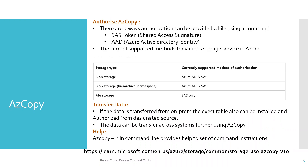Once everything is ready, you need to authorize AzCopy. There are two ways authorization can be provided: using a SAS token (Shared Access Signature token) and using Azure Active Directory identity. These are the two ways you can do authorization before you start transferring your Azure files from your local or on-prem systems to the cloud environment.